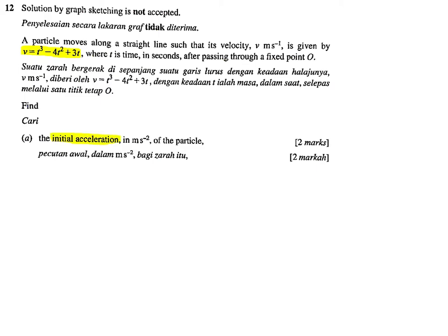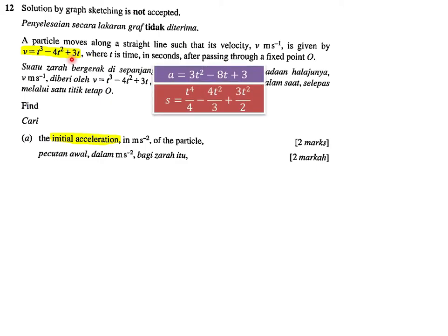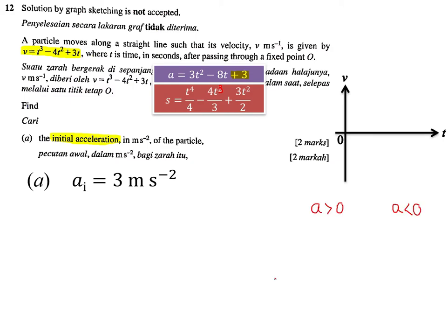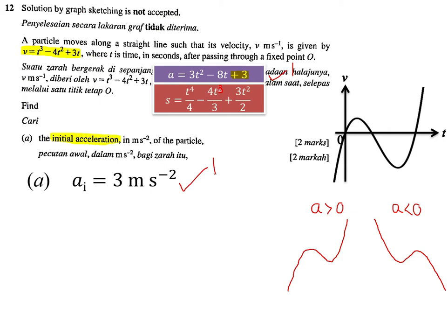Find the initial acceleration of the particle. You are advised to find the equation for acceleration and displacement. To find acceleration from velocity, you differentiate — acceleration is the gradient — giving 3t² - 8t + 3. To get the displacement, you integrate: t⁴/4 - 4t³/3 + 3t²/2. The a-intercept is 3, which gives the initial acceleration. When a is positive the graph goes up-down-up; when negative it goes down-up-down. One mark for the acceleration equation, one mark for the initial acceleration which is 3.